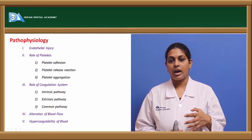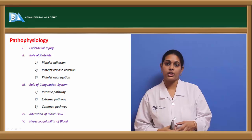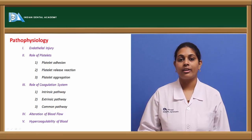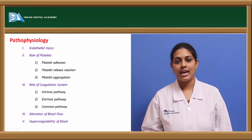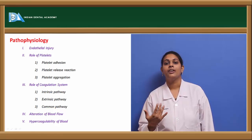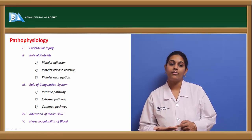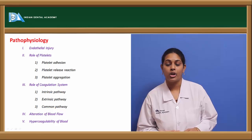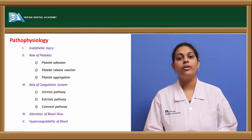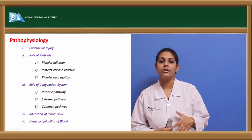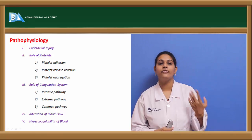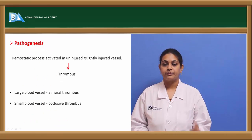Following clot formation, there is alteration in the blood flow — characterized by turbulence or stasis — followed by hypercoagulability, that is increased clotting factors or increased platelet adhesion. This increased platelet adhesion favors further clot formation. This is the pathophysiology of thrombosis.